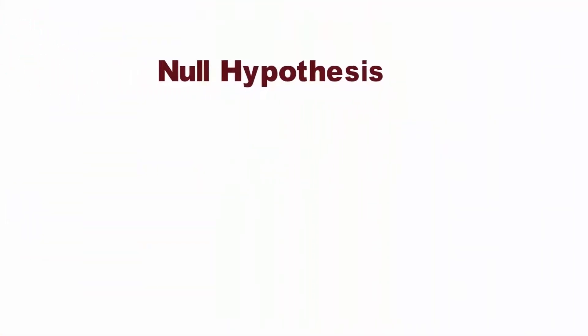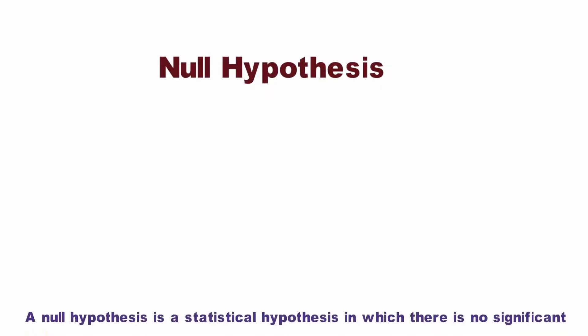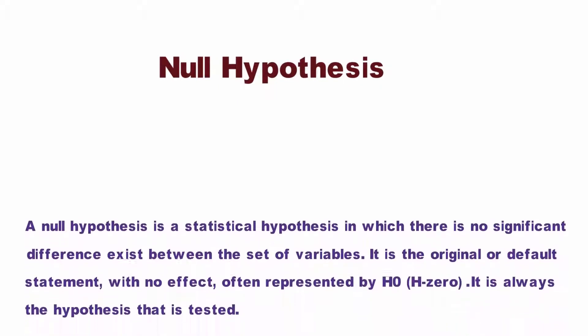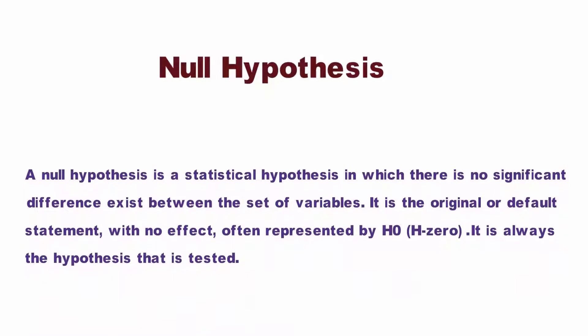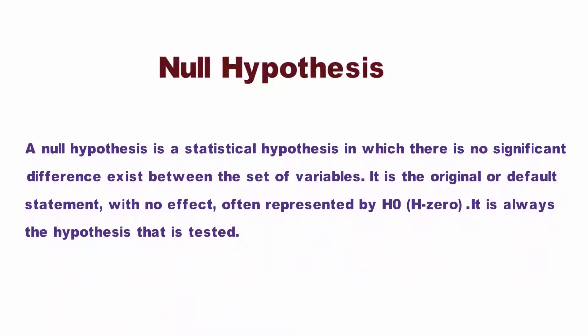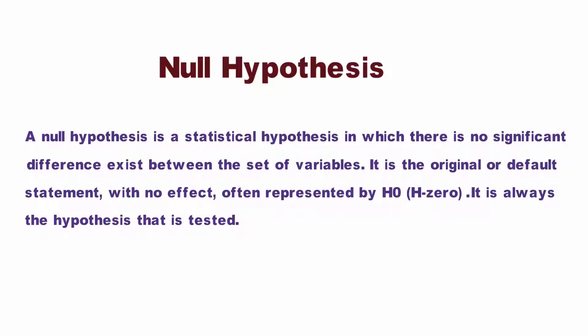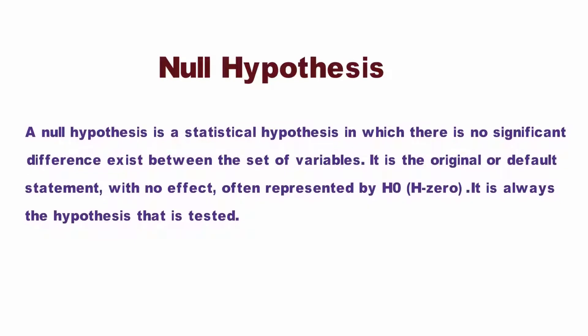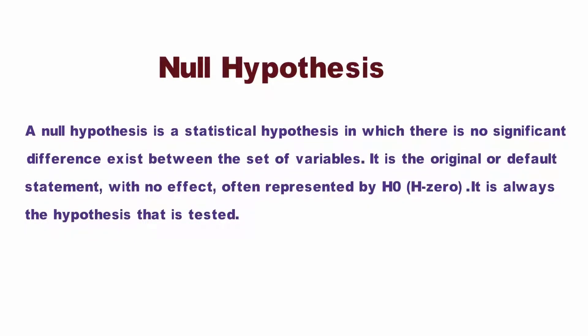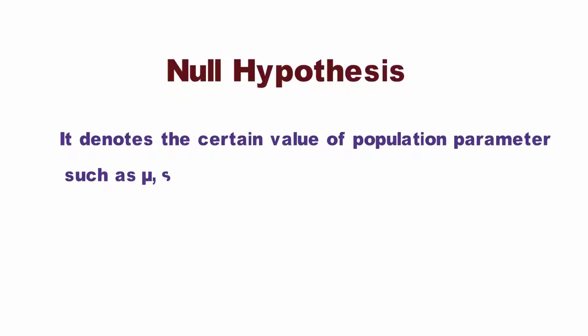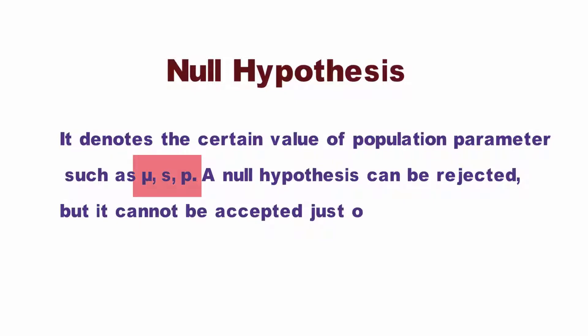What is null hypothesis? A null hypothesis is a statistical hypothesis in which there is no significant difference between the set of variables. It is the original or default statement with no effect, often represented by H0. It is always the hypothesis that is tested. It denotes the certain value of population parameters such as mu, sigma, P. A null hypothesis can be rejected, but it cannot be accepted just on the basis of a single test.